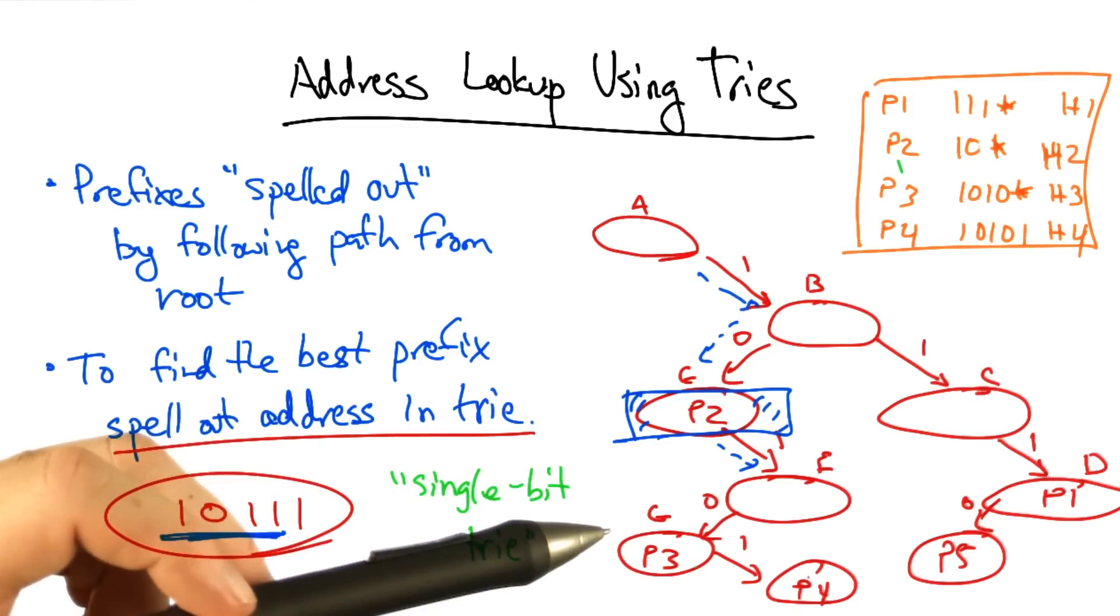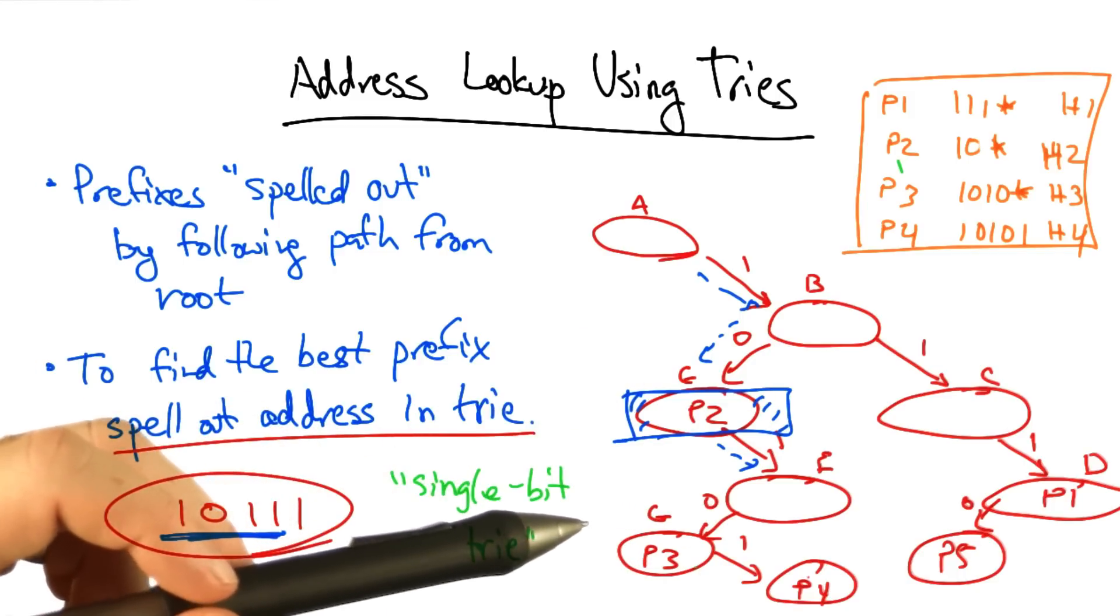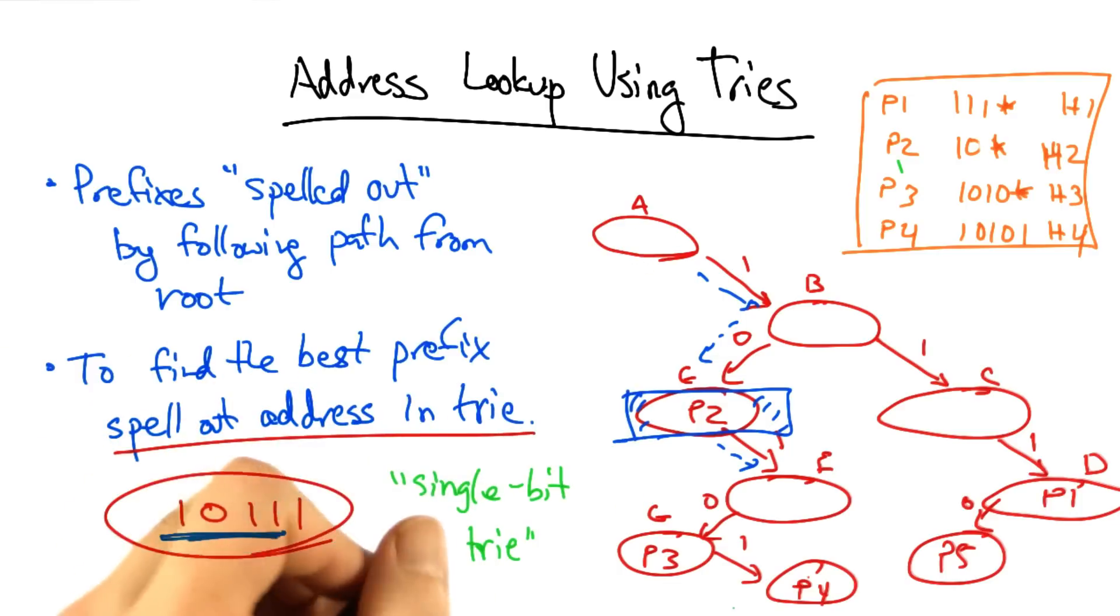Since each bit in the address requires one traversal in the trie, or one memory lookup. So this could be very bad.